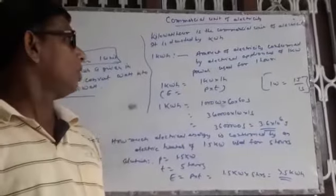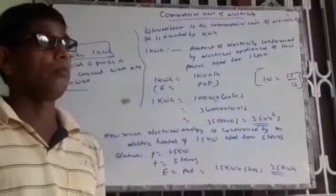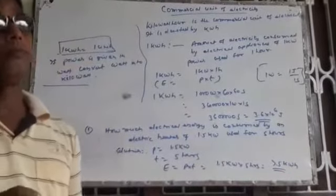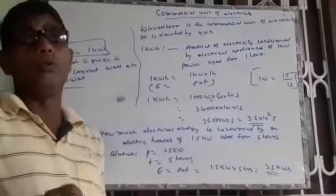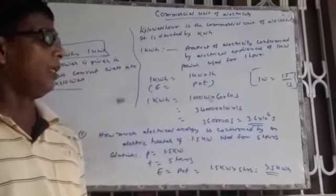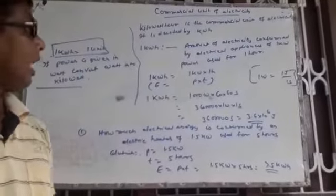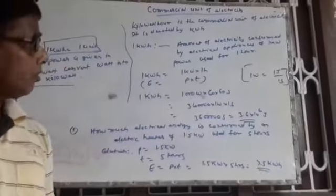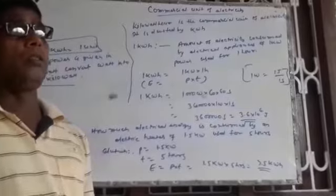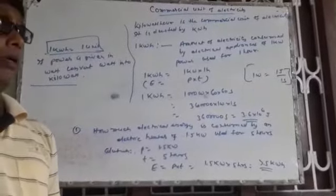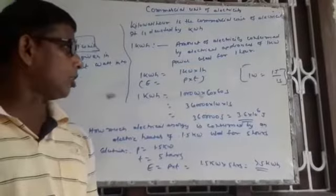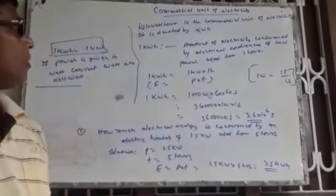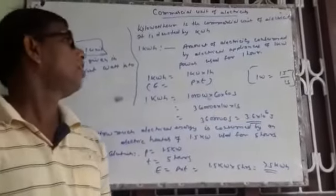Today I am going to explain the commercial unit of electricity. There is a question: what is the need of a commercial unit of electricity? Generally, energy is measured in Joule. Joule is the smaller unit of energy, and where a large amount of energy is needed, Joule becomes very small. That's why a larger unit is required to calculate the electricity consumed by different electrical appliances, and that's why the commercial unit is required.